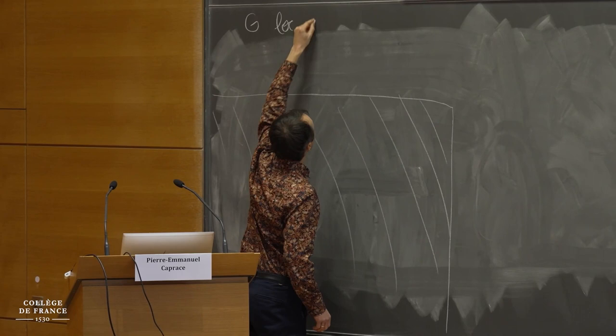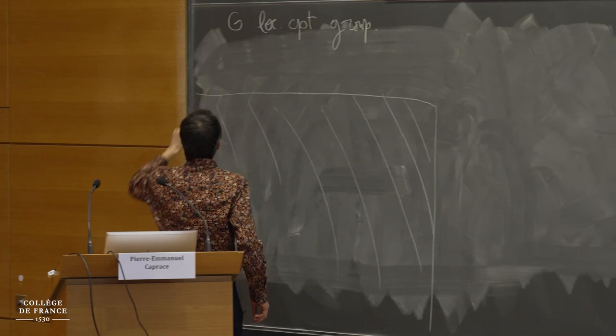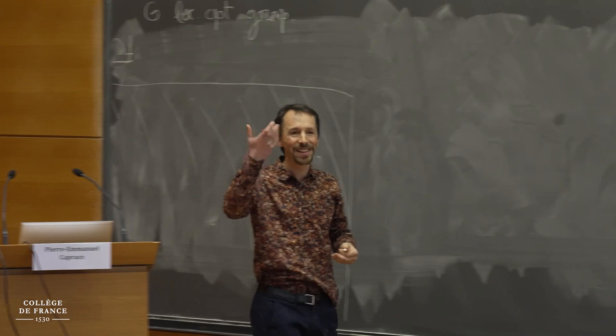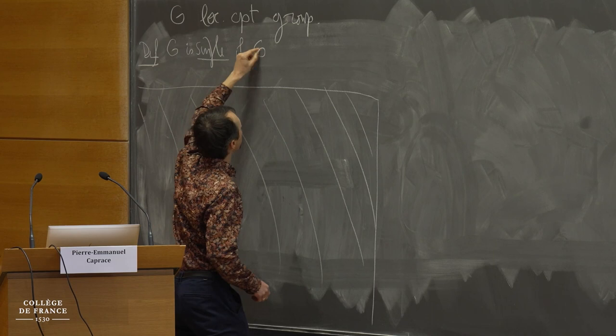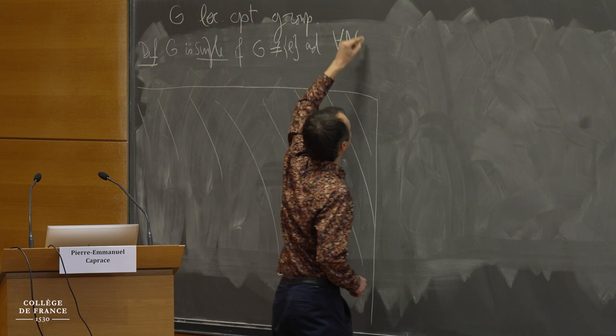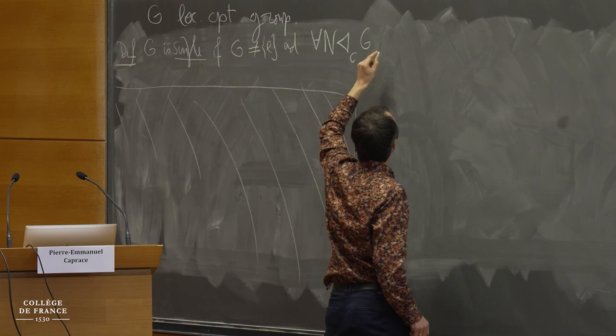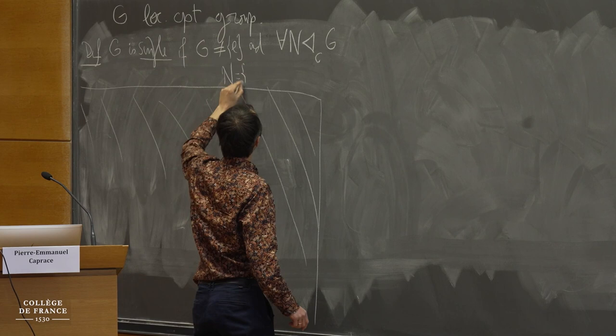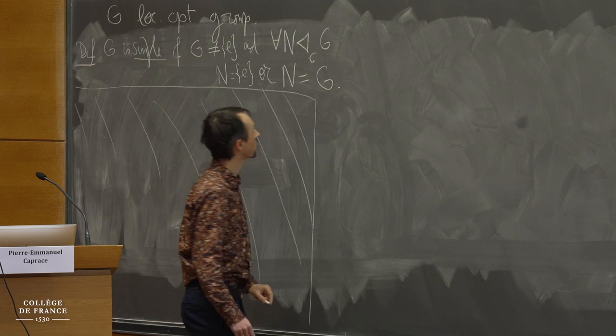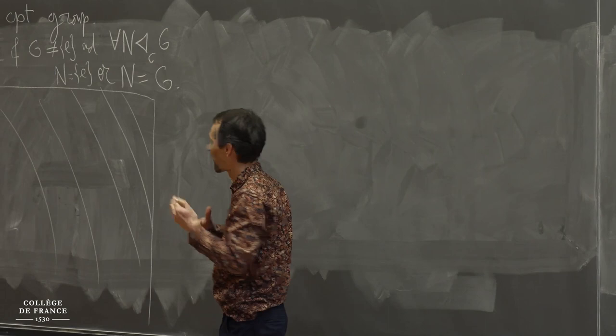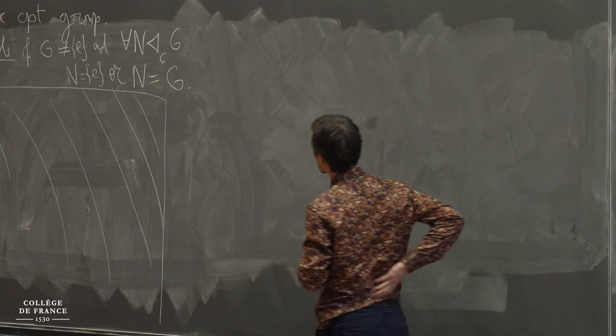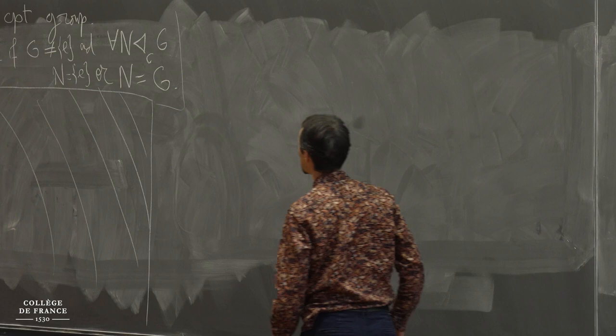In my talk, G will be throughout a locally compact group. There was this notion - a simple locally compact group - the expression that Tits used, and let me define this. So I will say that G as a locally compact group is simple if G is not the trivial group and if it does not have non-trivial closed normal subgroups. I only impose restriction on closed normal subgroups. There is another notion of simplicity which is algebraic, the simplicity of the underlying algebraic group, so abstract simplicity. And in general, there is a difference. I will not go so much into that direction in my talk. So remember, that's the definition of a simple locally compact group.